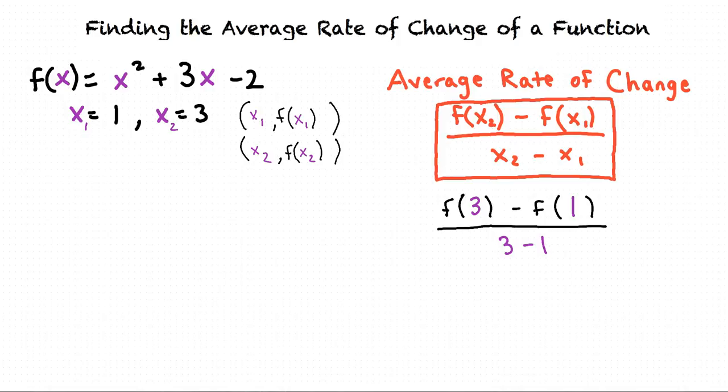Let's start with f of 3. We can now plug in 3 to the function. f of 3 equals 3 squared plus 3 times 3 minus 2. 3 squared is 9 plus 3 times 3 is 9 minus 2. 9 plus 9 is 18 minus 2 equals 16.